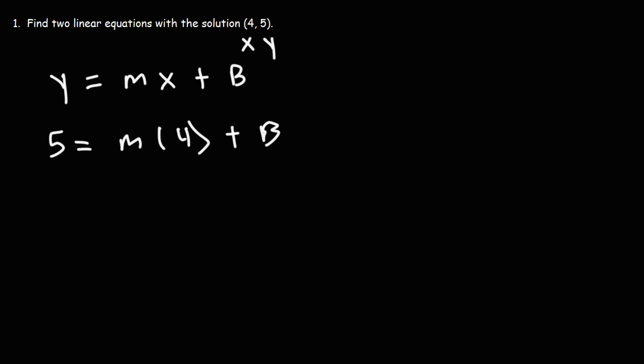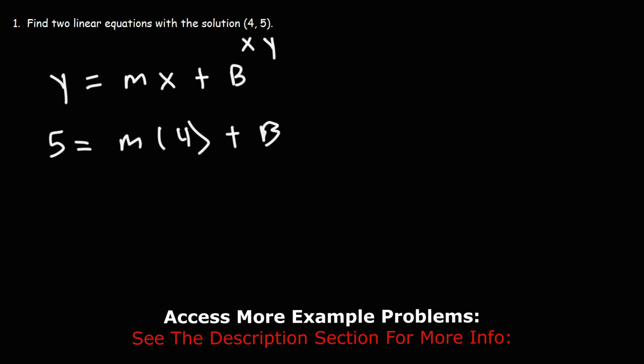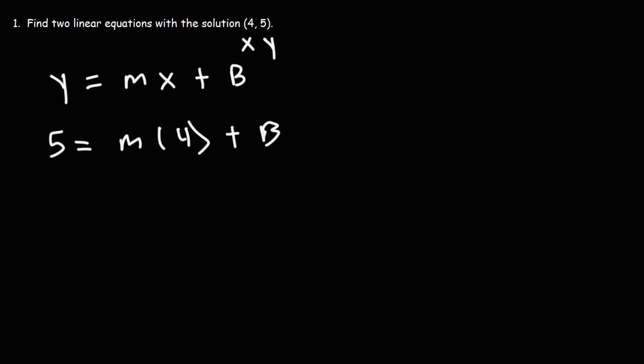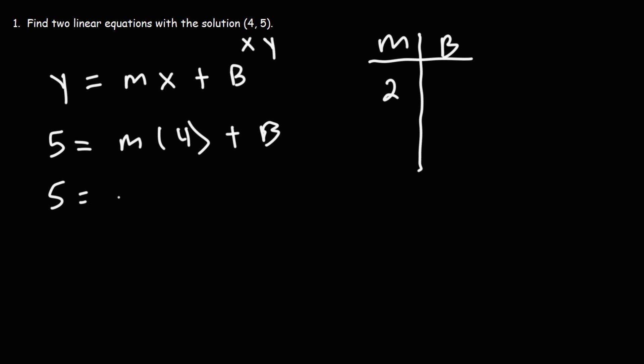Now we have two variables and only one solution, so there are so many ways we can write linear equations that will give us the solution. All we need to do is pick a value for m and calculate b. Let's make a table between m and b, and pick 2 for m.